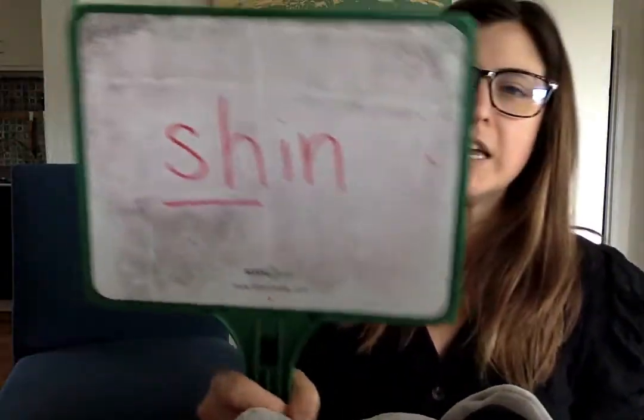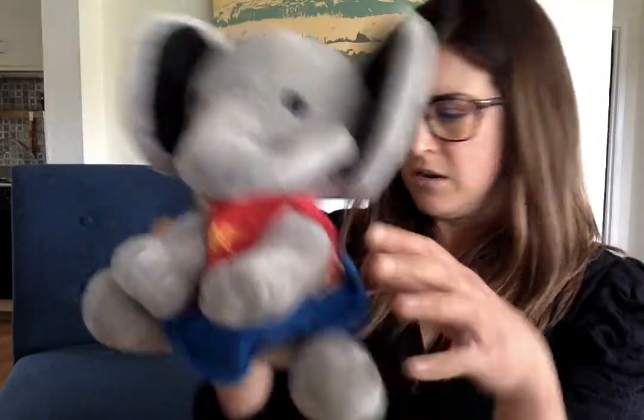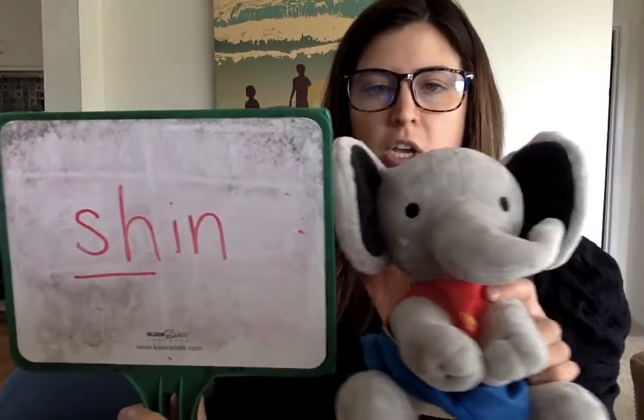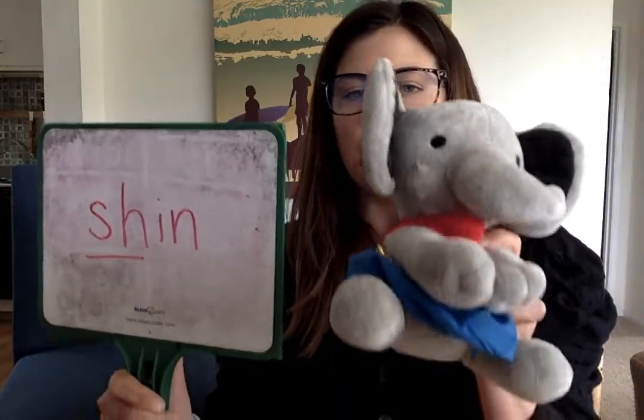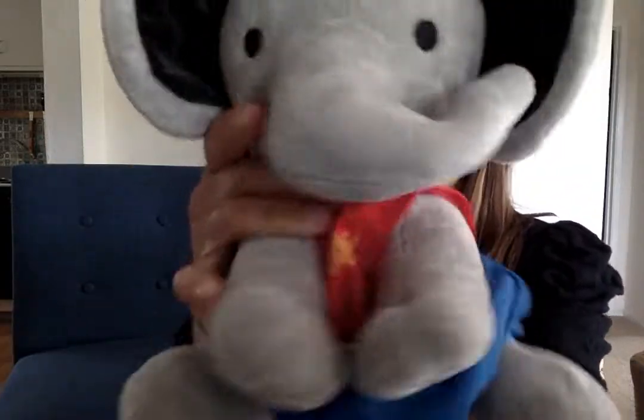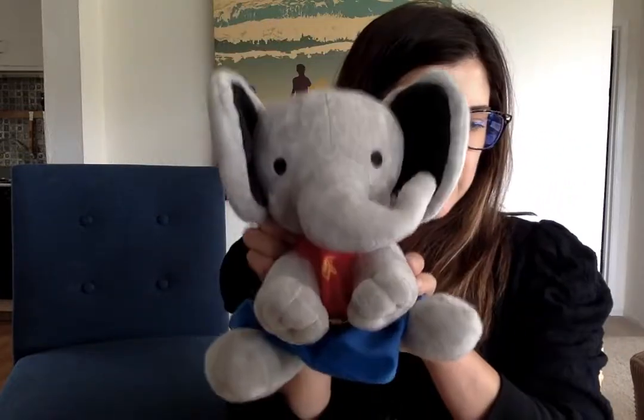Our very last word — this one is much easier to sound out. It rhymes with chin. It's shin. Shin is like above your foot, right here — it really hurts if you hit your shin. We're doing the word shin: you put your shin in, you put your shin out, you put your shin in and you shake it all about. You do the hokey pokey and you turn yourself around. That's what it's all about.